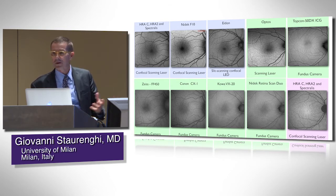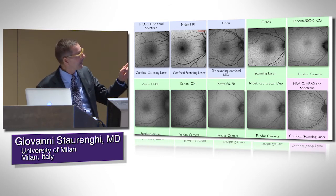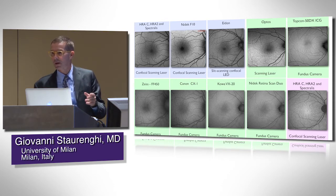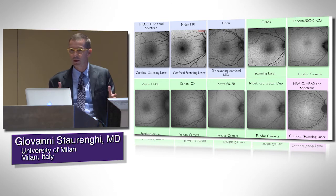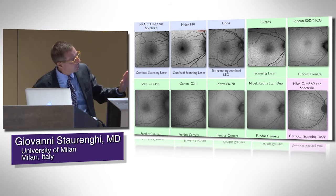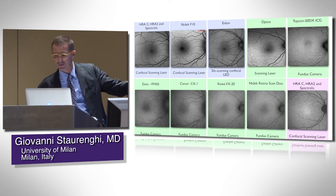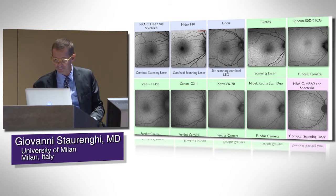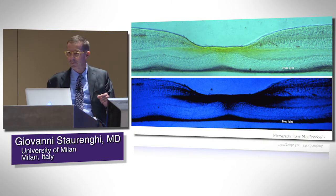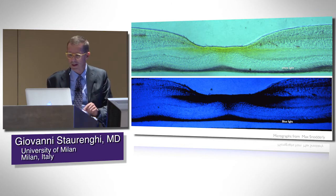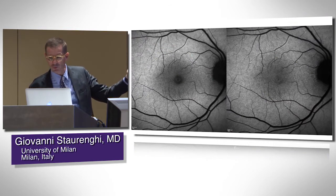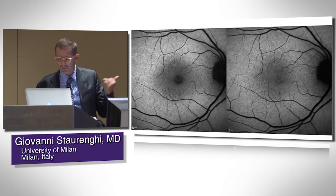The big difference once you get the images is the dark spot in the center of the fovea. That dark spot is due to the yellow pigment — lutein, or macular pigment. As you move to green-light autofluorescence, you see that it will disappear. Because the macular pigment is yellow, when you use blue light it is absorbed. You can actually have both blue and green taken with the same instrument, the Spectralis, and you clearly see the dark spot in one that is not visible in the other.